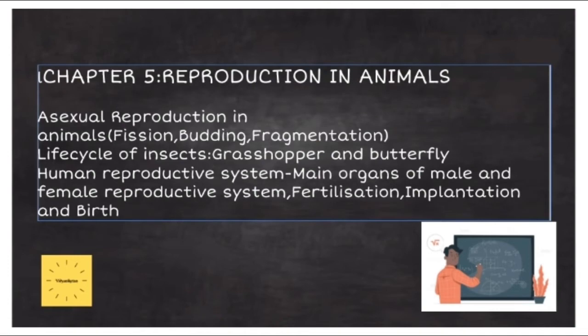The third chapter under Unit 2 is Reproduction in Animals. Here we will study about the asexual method of reproduction in animals, namely fission, budding and fragmentation. We will also look at the life cycle of some insects, grasshopper and butterfly. Then we will finally study about the human reproductive system, wherein we will look at the main organs of male and female reproductive system, the process of fertilization, implantation and finally birth.